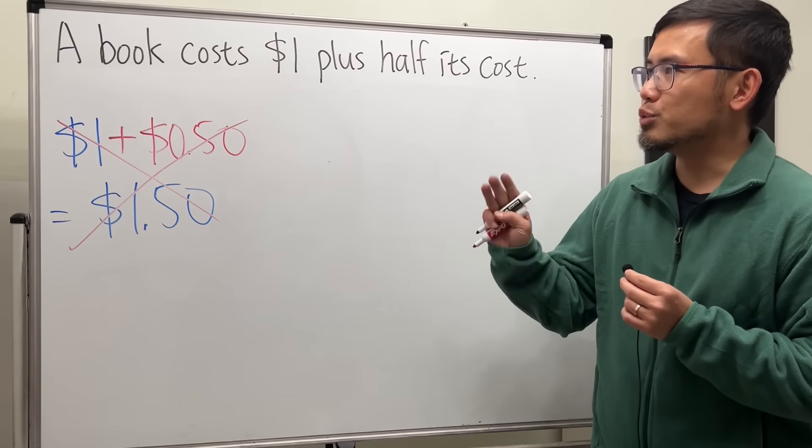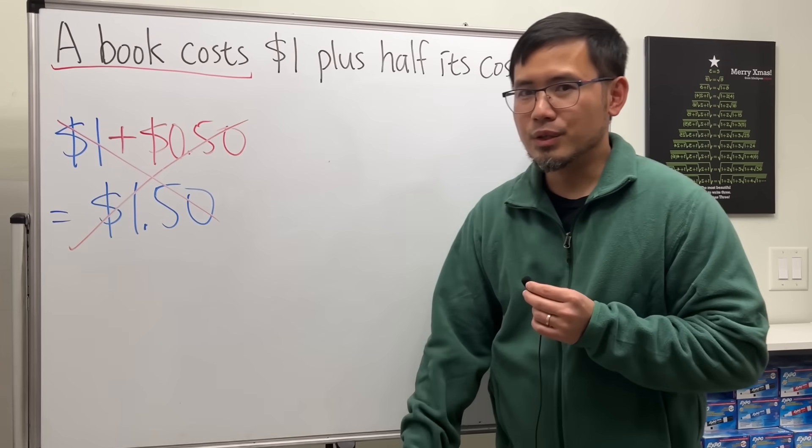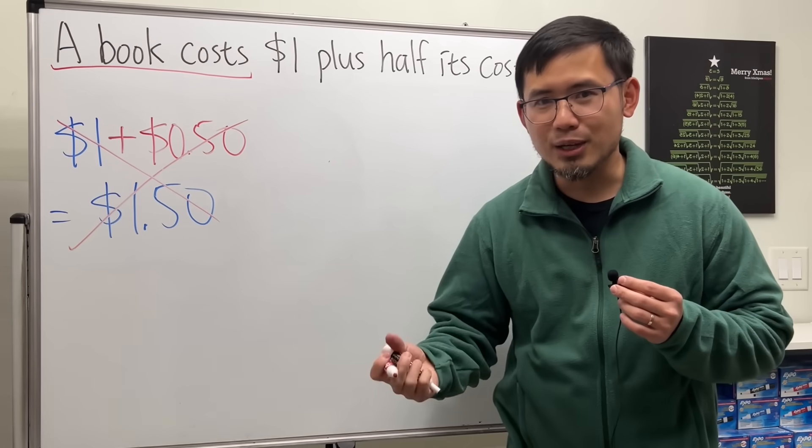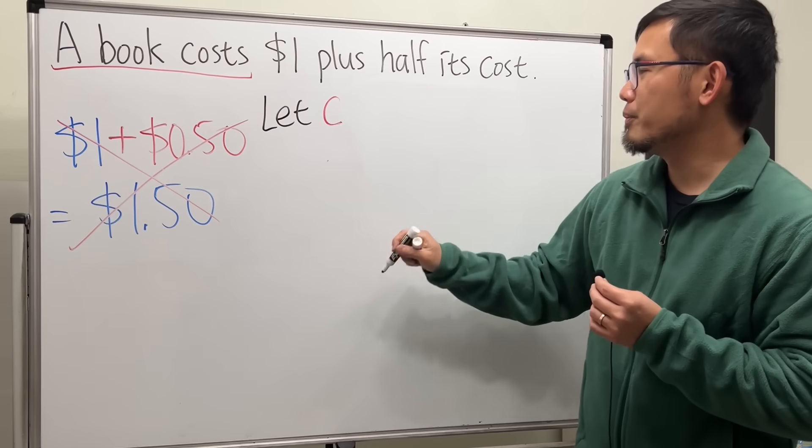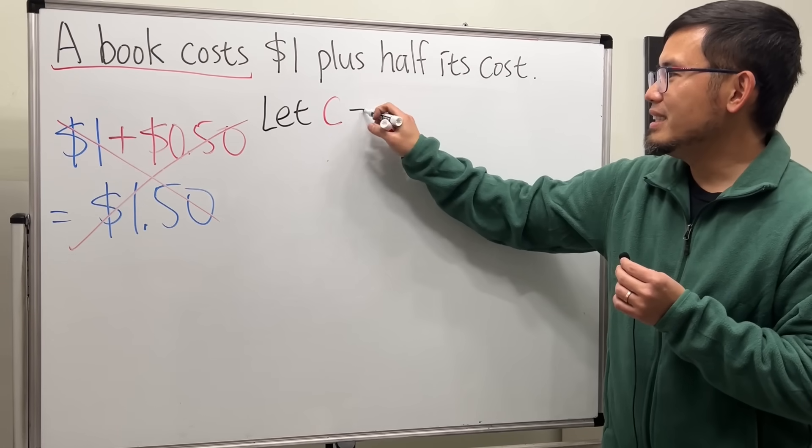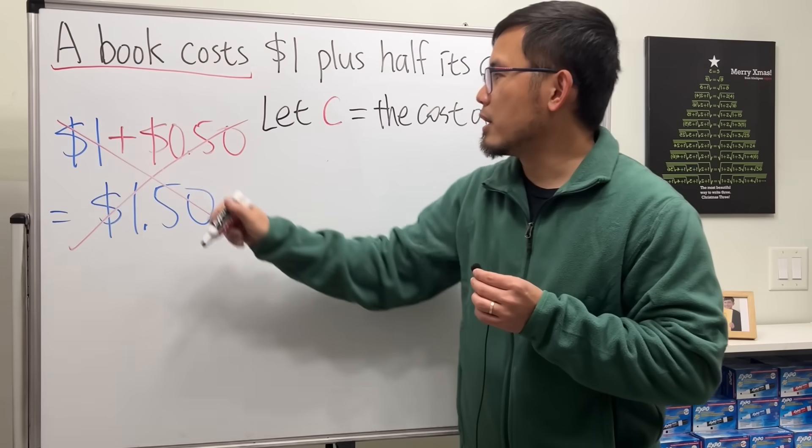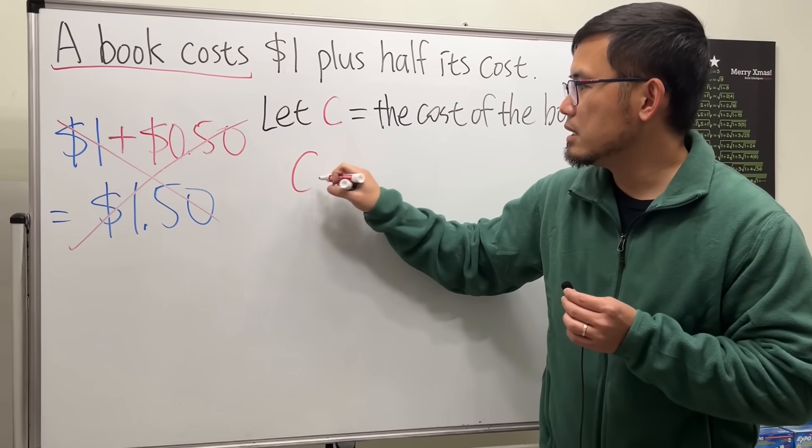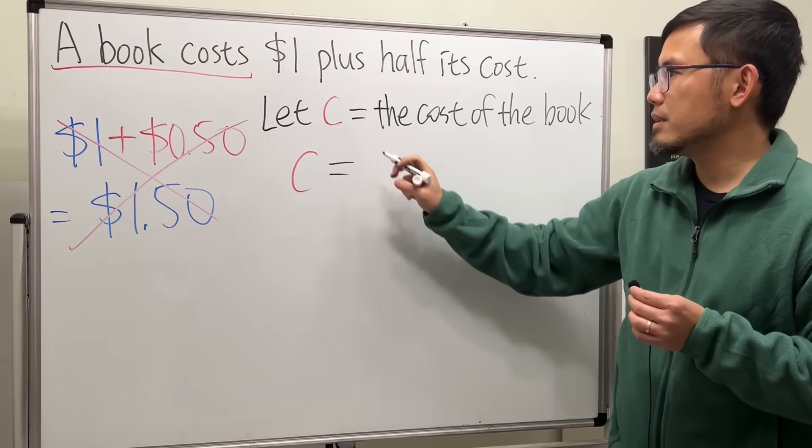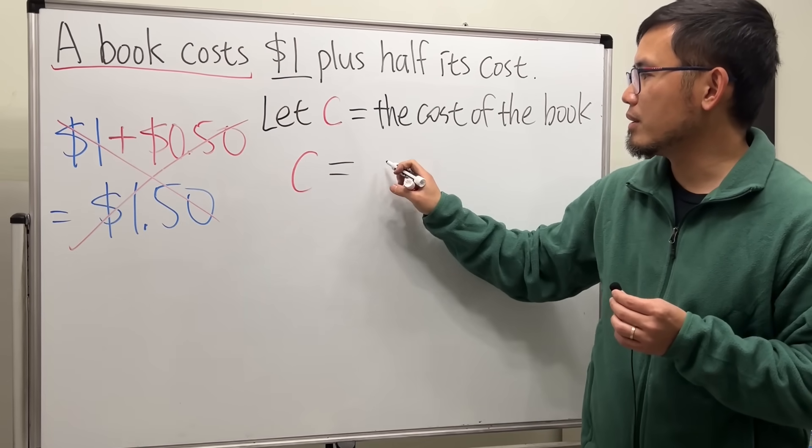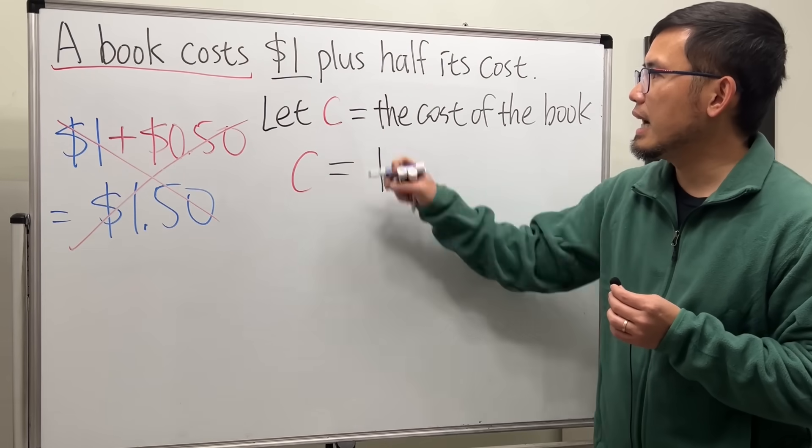It's not $1, it's not $1.50. This is how we can do it. Here's the first part: a book costs, which we don't know. Let's do some algebra. Let's use C for the variable for the unknown. Let C equal the cost of the book. So the first part says we have C, and that is going to be equal to $1. So that's the second part right here—$1. So let's just put down 1.